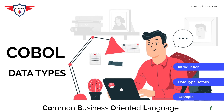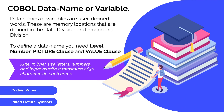Now let's see how you can define variables in your COBOL program. A COBOL data name or variable is a user-defined word — a memory location defined in the data division or in the procedure division. To define a data name you need three specific things: first, the level number; second, the picture clause to define the data type; and third, the value clause to assign the initial value to that variable.